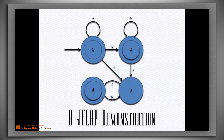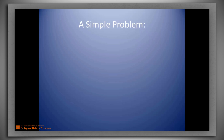In this video, we continue the demonstration of the use of JFLAP to build a finite state machine. Recall the simple problem that we had in the previous video. We accepted as input a string of A's, B's, and C's.